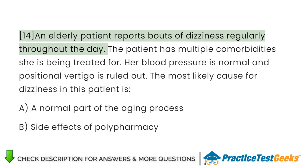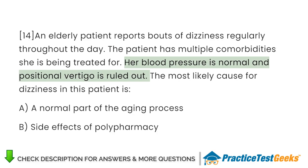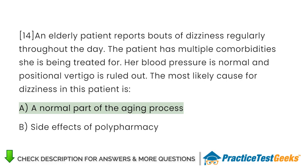An elderly patient reports bouts of dizziness regularly throughout the day. The patient has multiple comorbidities she is being treated for. Her blood pressure is normal and positional vertigo is ruled out. The most likely cause for dizziness in this patient is: A. A normal part of the aging process. B. Side effects of polypharmacy.